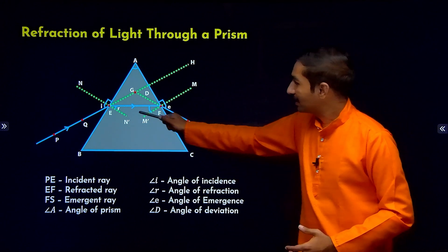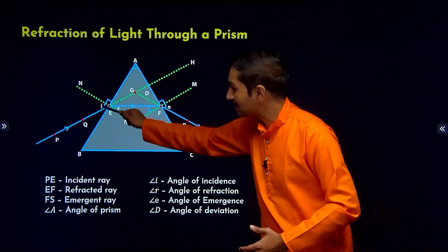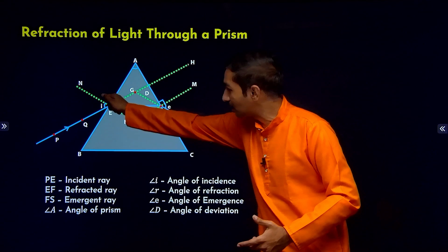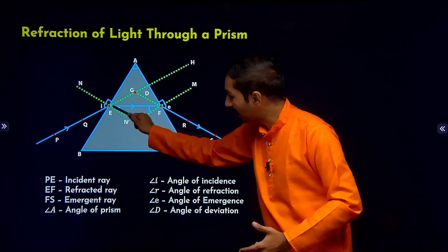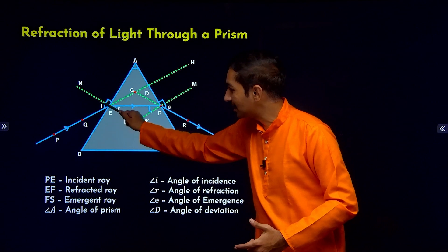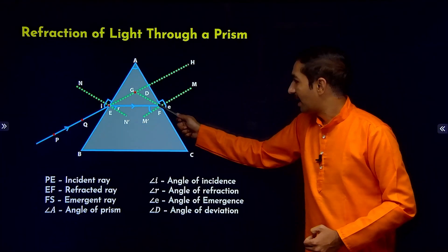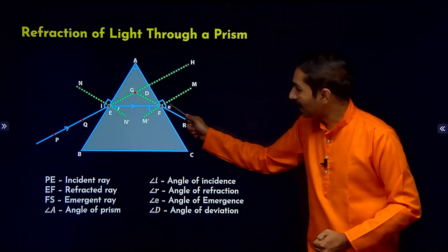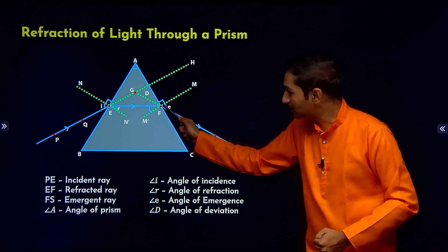This is called as angle of incidence. Angle of incidence is the angle between the normal at this point and the incident ray. The angle between normal and the incident ray, that is called as the angle of incidence.